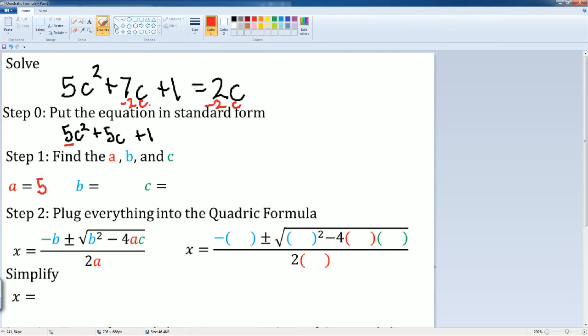My a term is going to be that 5 which is in front. My b is going to be the 5 here. Then my c is going to be the 1 here. Step 2, I can plug into the quadratic equation. So it is x is equal to negative 5 plus and minus radical 5 squared minus 4 times 5 times 1, divided by 2 times 5.